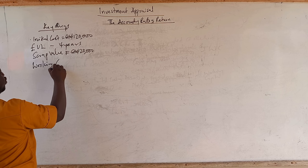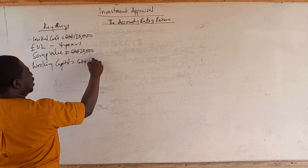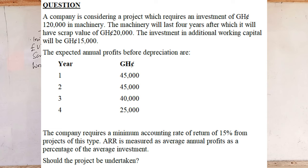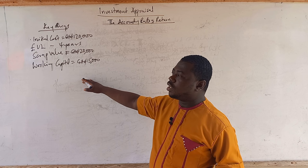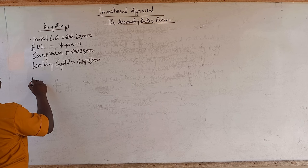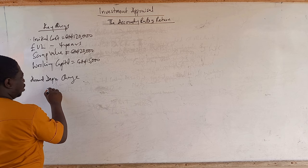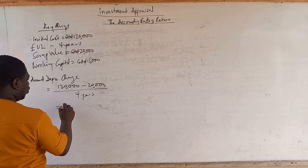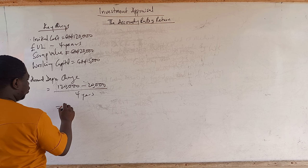We can calculate depreciation using the straight-line method: cost minus scrap value over useful life. That is (120,000 − 20,000) ÷ 4 years = 25,000 per year. So every year there is a depreciation charge of 25,000. We will subtract this from each year's profit before depreciation to get the net profit after depreciation for each year.